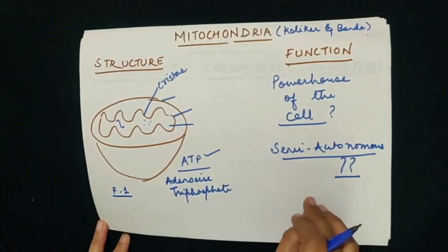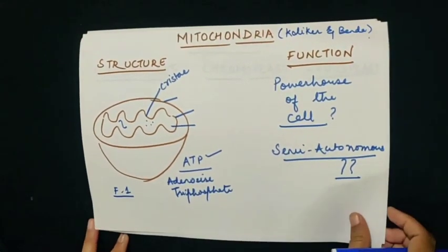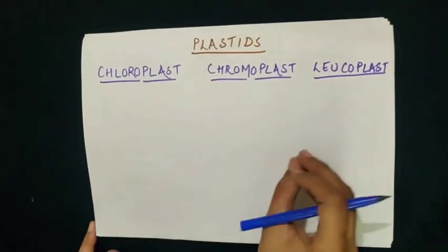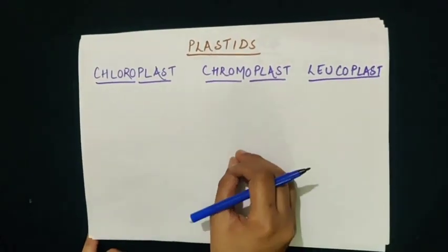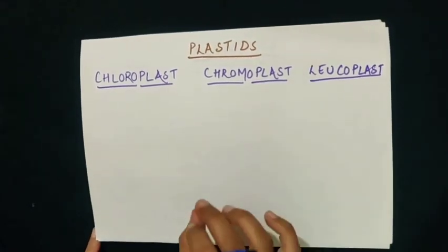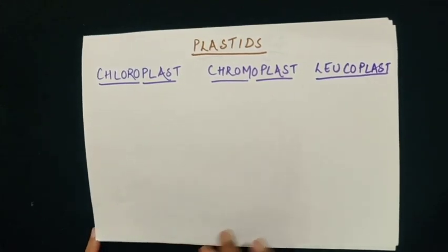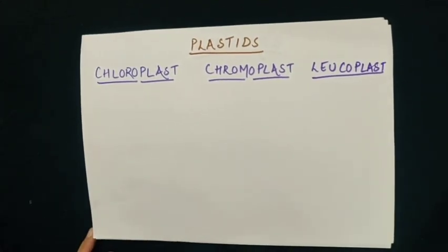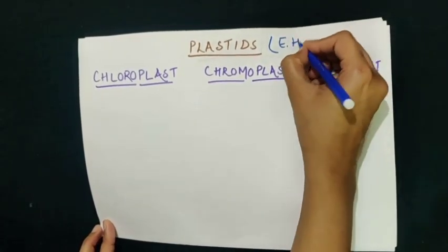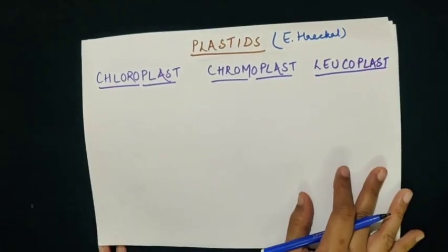Now let us move on to our second topic, and that is plastids. Plastids are cell organelles which are specific only to the plant cell — they are characteristic features of the plant cell only and are completely absent in an animal cell. These plastids were discovered by E. Haeckel. There are three kinds of plastids: chloroplast, chromoplast and leucoplast.